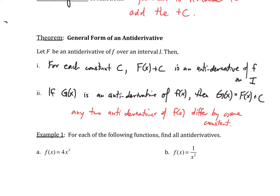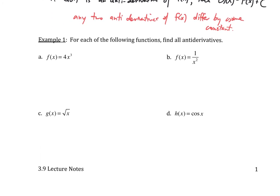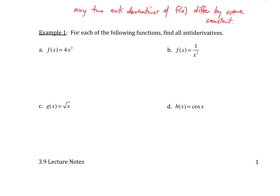Let's look at four examples. Example A: lowercase f equal to 4x cubed. The antiderivative is x to the fourth plus c. We can check by taking the derivative: the derivative of capital F of x is 4x cubed plus zero, which is just 4x cubed.